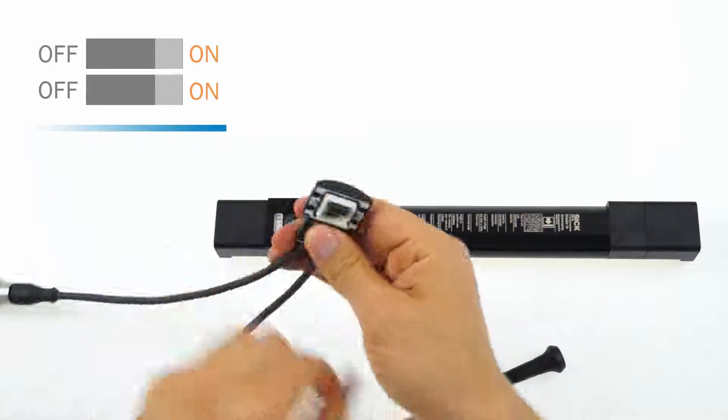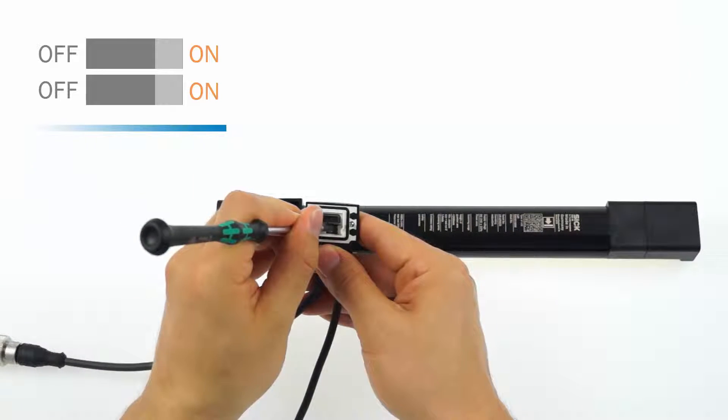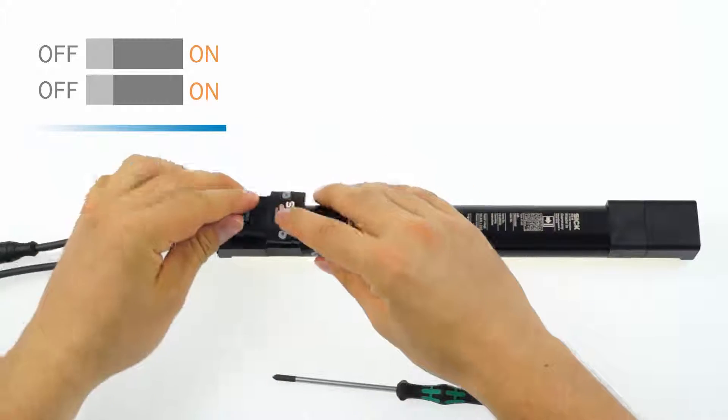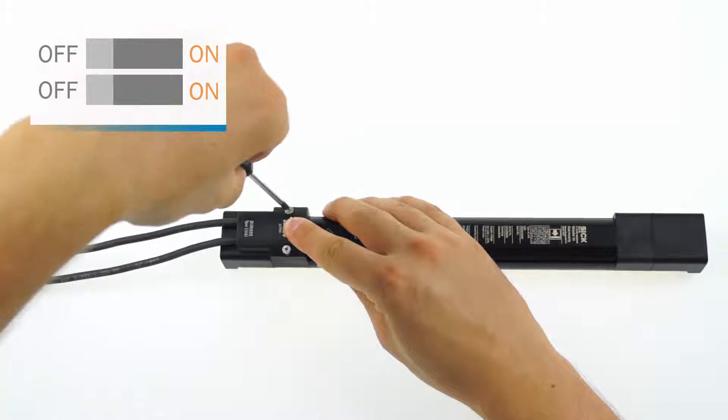In the second step remove the system plug again and set both of the DIP switches back to their initial position, which is OFF. Reconnect the system plug and then the power supply.